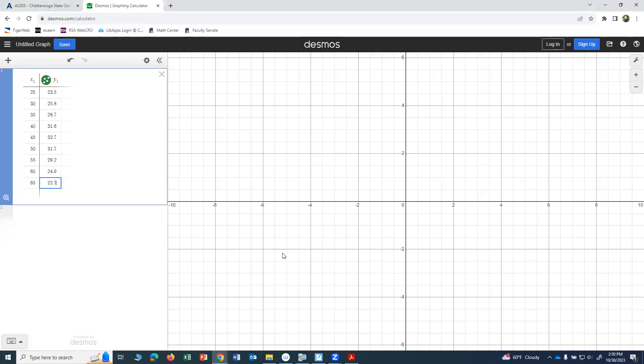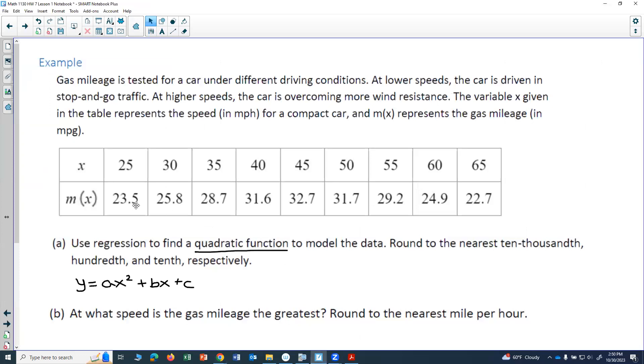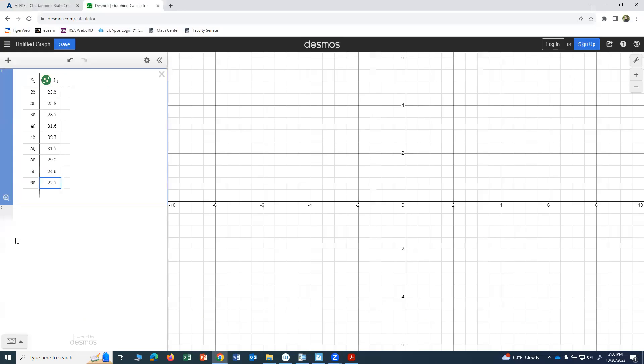Now, at this point, double check, look back at your data, make sure that your x's and y's match up with what we were given in your original table. If you enter one value wrong, it will mess up the answer. Okay, so I have the table. Now I'm going to go to the second box here.